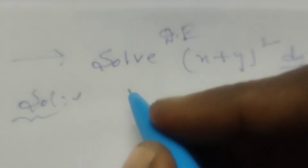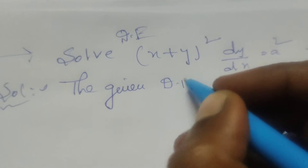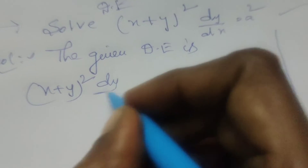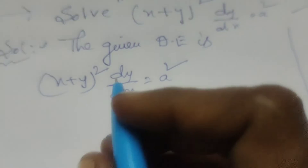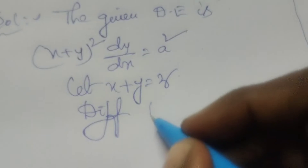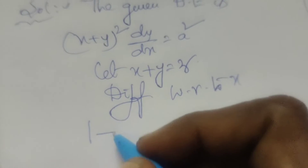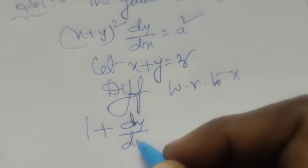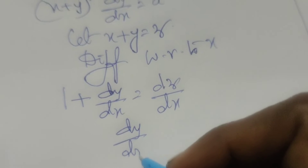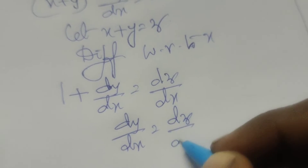First of all, write the given differential equation: (x + y)² · dy/dx = a². Here, let x + y = z. Now differentiating this with respect to x gives 1 + dy/dx = dz/dx, so dy/dx = dz/dx − 1.